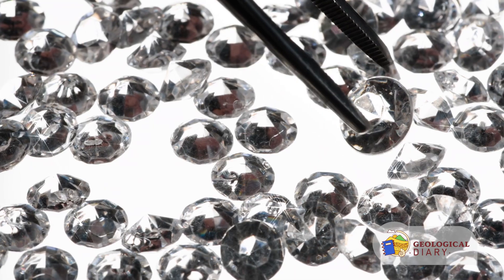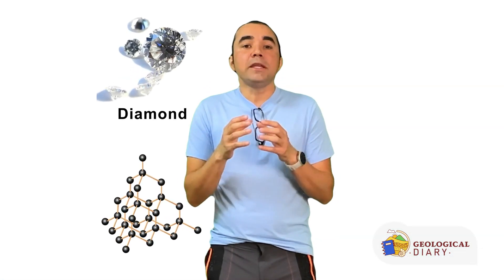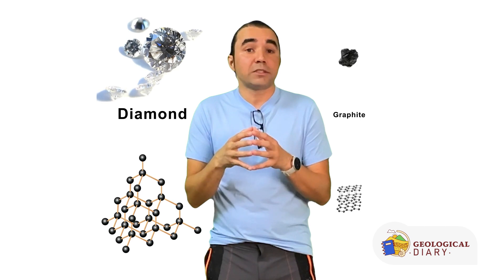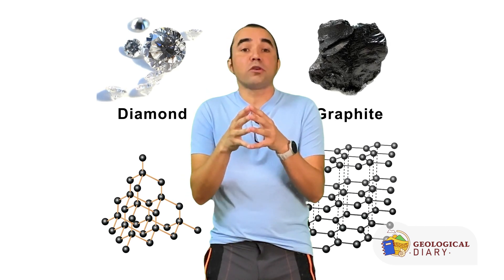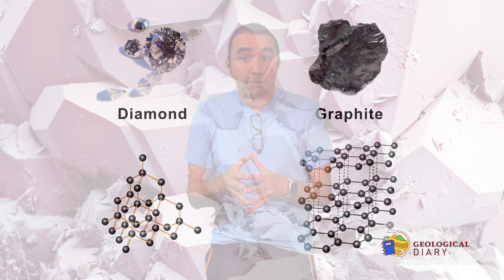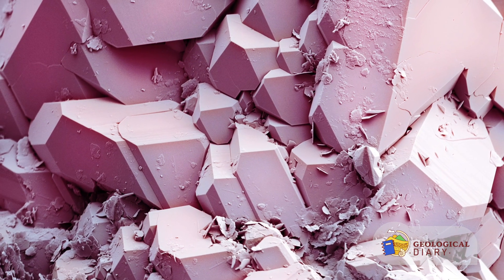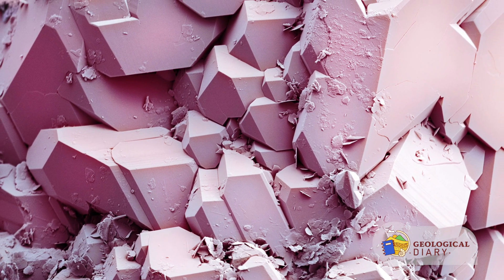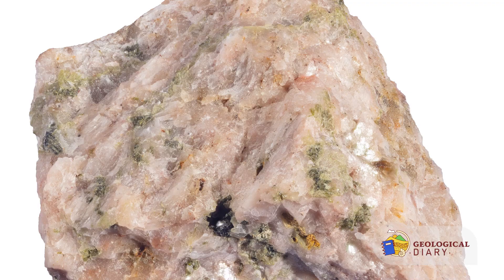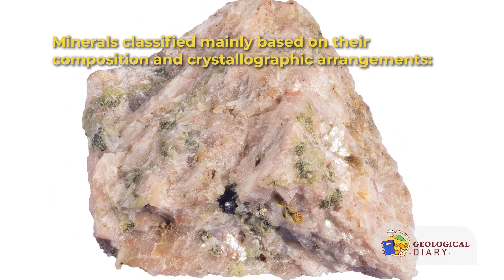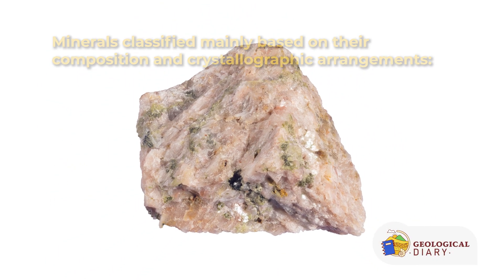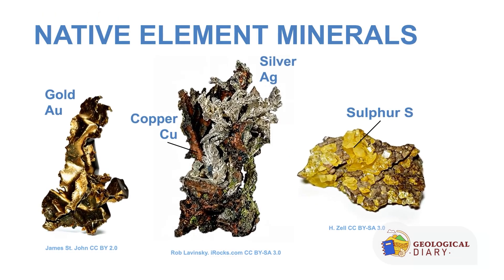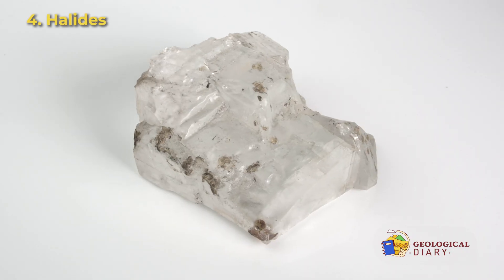Today thousands of minerals have been identified and named. Broadly speaking, they are classified into many mineral groups; however, the rock-forming minerals are perhaps only a few dozens. To understand them better, minerals follow a hierarchical approach where we classify them into mineral groups and mineral species. They are classified mainly based on their composition and crystallographic arrangements — these include silicates, native elements, carbonates, halides, oxides, phosphates, sulfates, and sulfides.